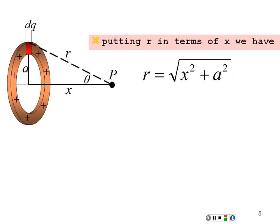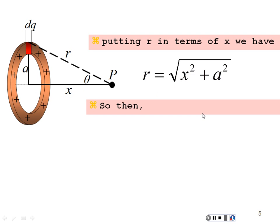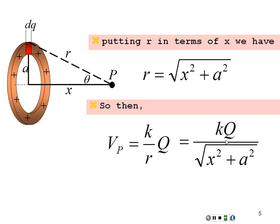Let's put r in terms of x, which is the variable we can use for distance away from this ring. Looking at the right triangle, r is the hypotenuse and it equals the square root of x squared plus a squared, where a is the constant radius of the ring and x is the variable we'll be changing. So our potential is k q over r, which is k q over the square root of x squared plus a squared.